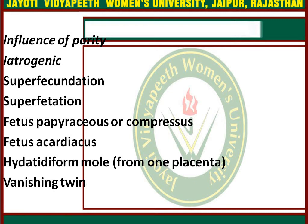Fetus acardiacus occurs only in monozygotic twins, where part of one fetus remains amorphous and becomes parasitic without a heart. Hydatidiform mole from one placenta with a normal fetus and placenta has been observed ultrasonographically. In the vanishing twin phenomenon, serial ultrasound imaging in multiple pregnancies has revealed occasional death of one fetus, with the dead fetus simply vanishing by resorption — the rate of disappearance could be as high as 40%.